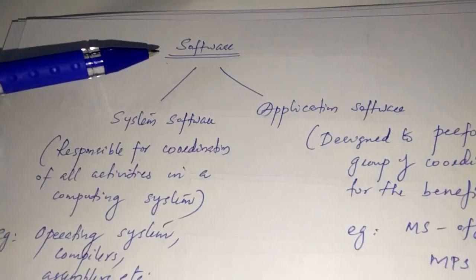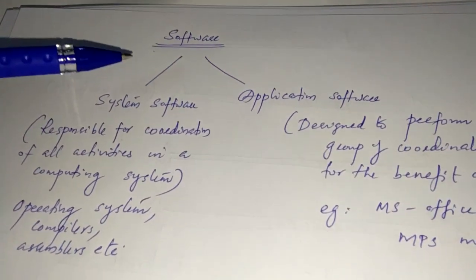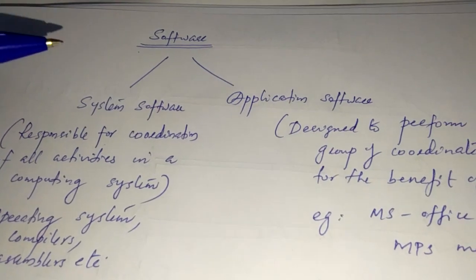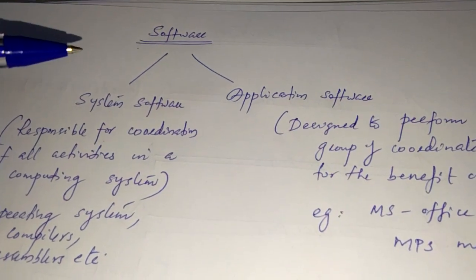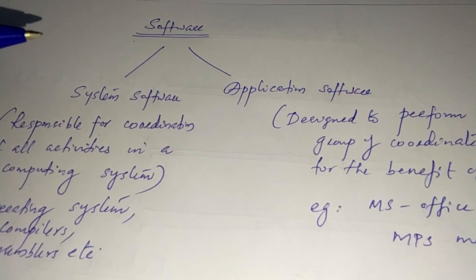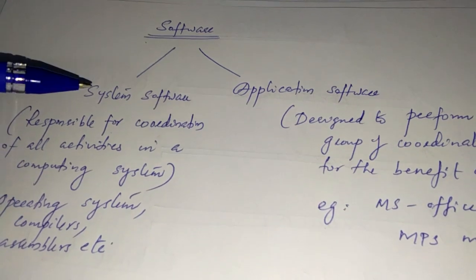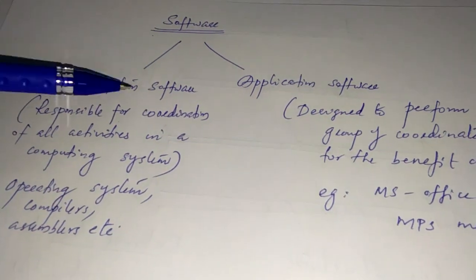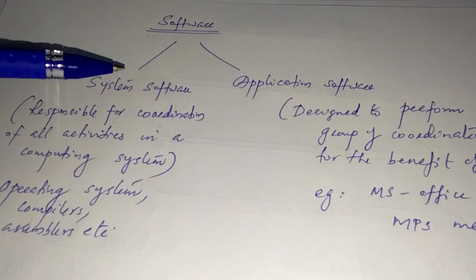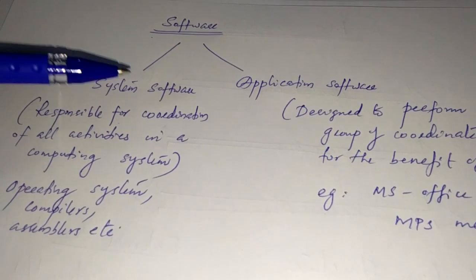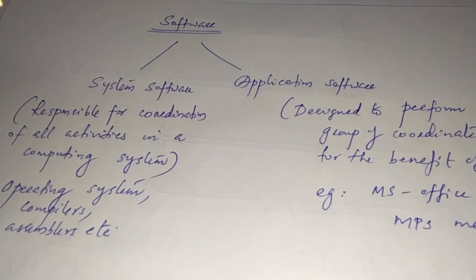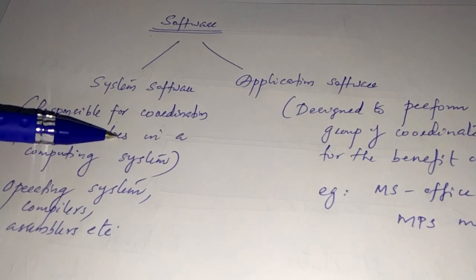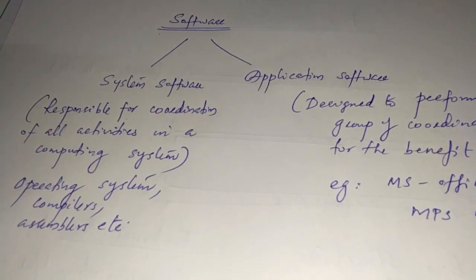Software is actually divided into two types: one is system software and one is application software. Let us see what will be the difference between system software and application software. System software is actually responsible for coordination of all activities in a computing system.